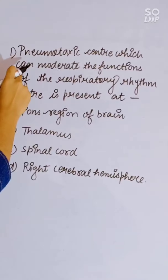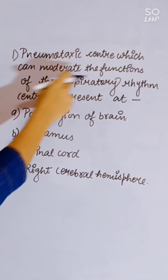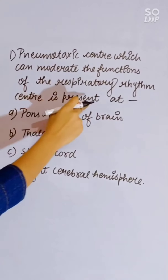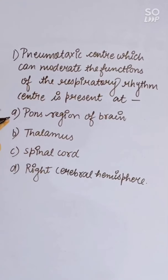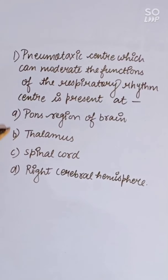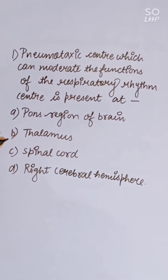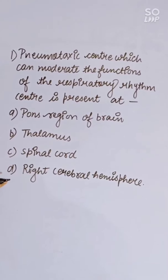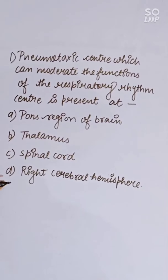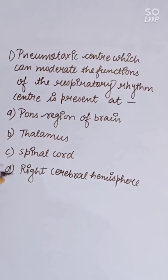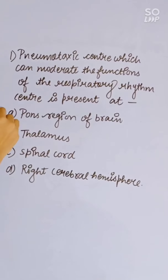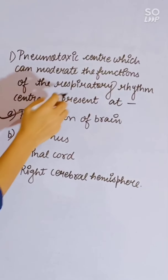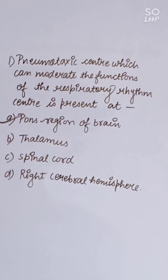The pneumotaxic center, which moderates the function of the respiratory rhythm center, is present at: pons region of brain, thalamus, spinal cord, or right cerebral hemisphere. The pons region of the brain moderates the function of the respiratory rhythm center. Correct answer is A.